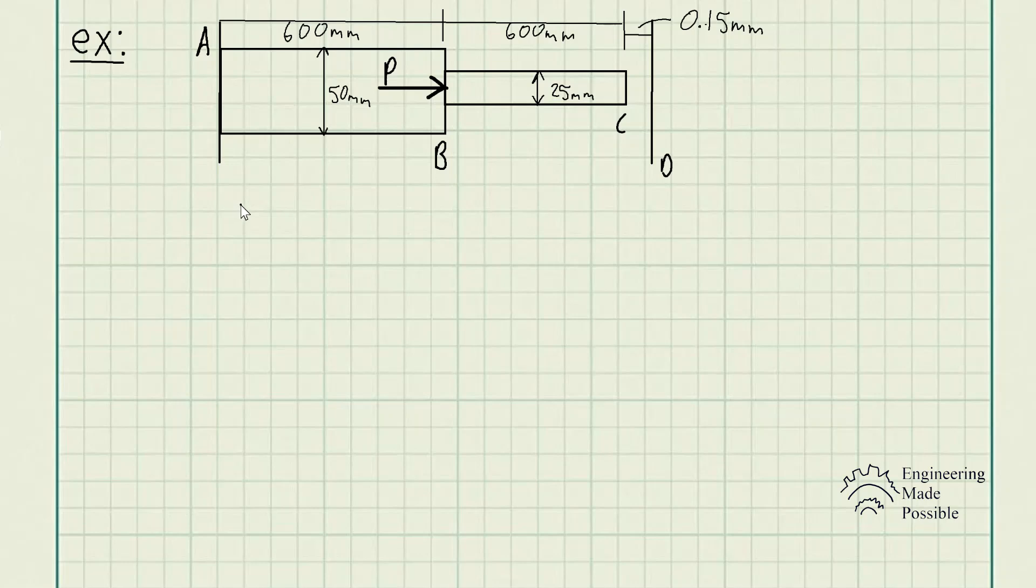determine the support reactions at A and D when the force P equal to 200 kN is applied. The assembly is made of A36 steel. We know the modulus of elasticity of A36 steel is 200 gigapascals or 200 times 10 to the 6 kilopascals.